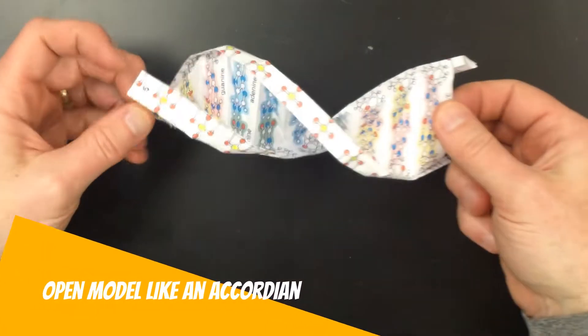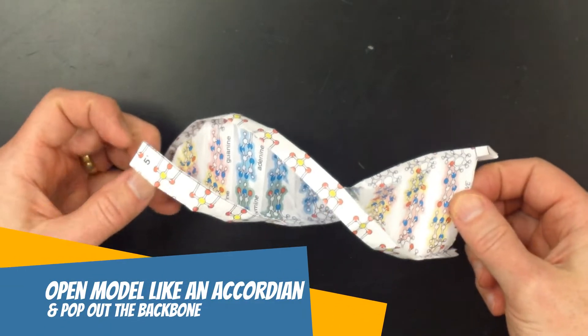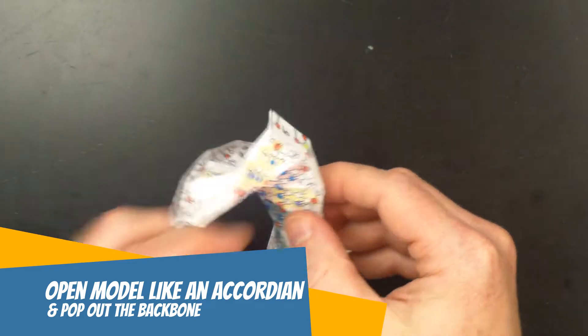Last, open the model like an accordion, and pop out the backbone on each side.